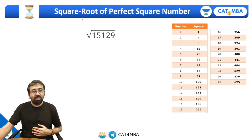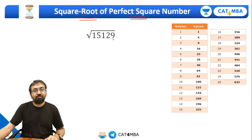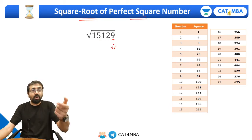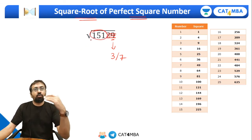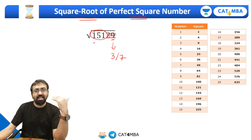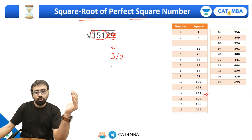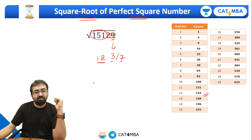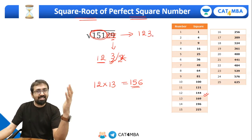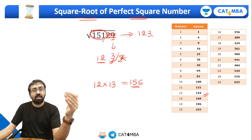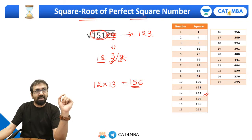Let's take one larger number and find the square root of a perfect square. Take 15129 — the last digit is nine. Whose square ends with nine? Three or seven. Remove the last two digits and look at the remaining number: 151. Which perfect square number is just below 151? It's 144, which is twelve squared. So this number will be twelve with last digit either three or seven — meaning 123 or 127. Multiply 12 by the next number 13: that's 156. Since 151 is less than 156, we take the lesser possibility — 123. The square root of 15129 is 123.